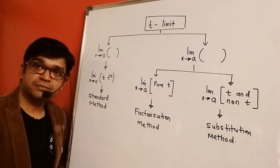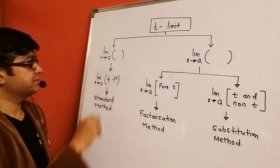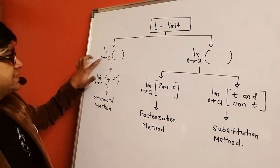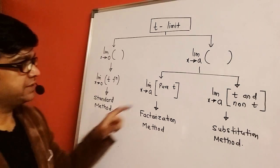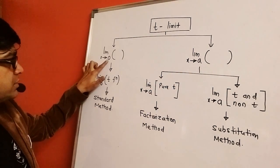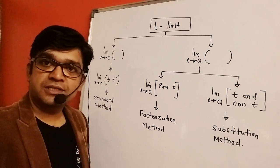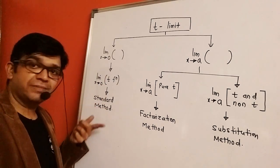The first thing when a trigonometry limit problem comes to you, you should look at whether x is tending to 0 or tending to a non-zero number. If x is tending to zero and you see a trigonometry function, remember it is going to be solved by standard method.